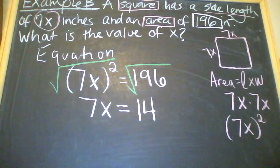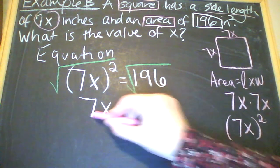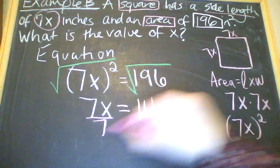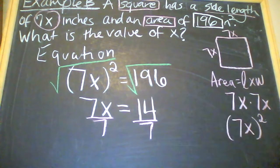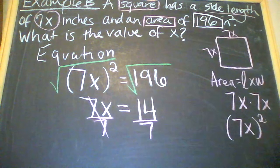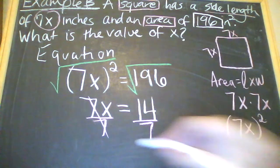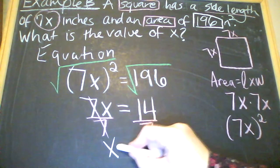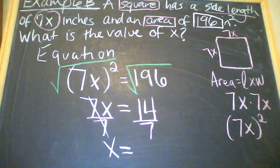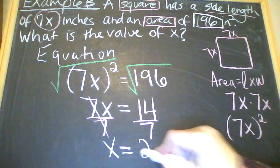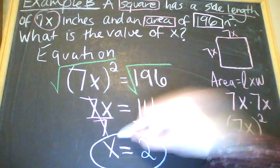So then your last step of solving this equation is dividing by 7. 7 divided by 7 is 1, so they cancel out. So you have x equals 14 divided by 7 is 2. Therefore x is equal to 2.